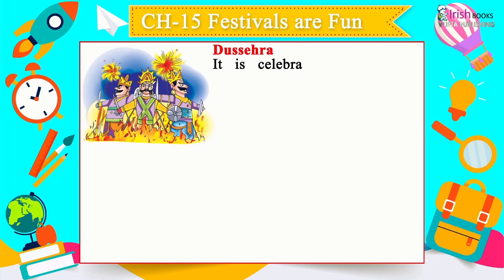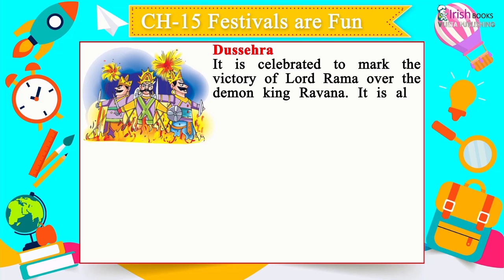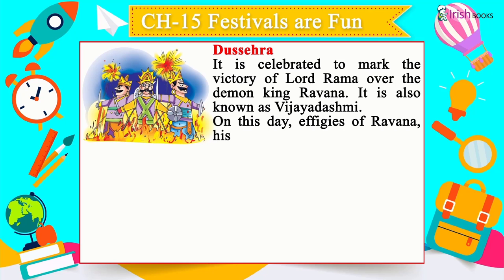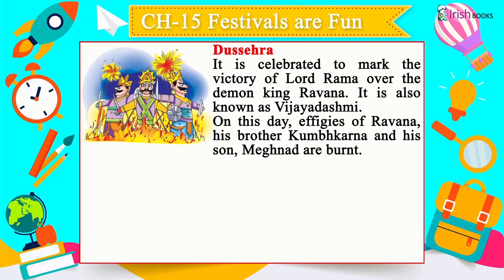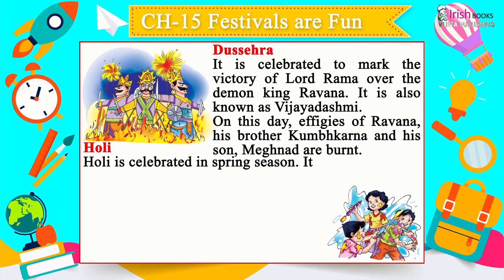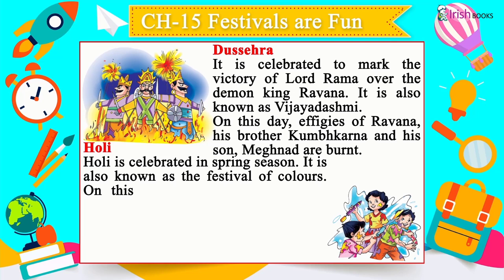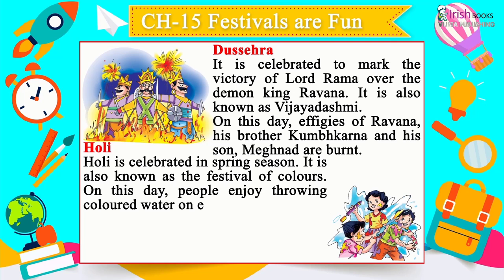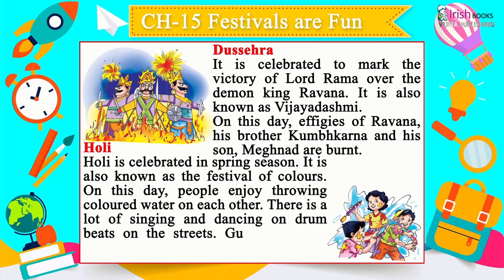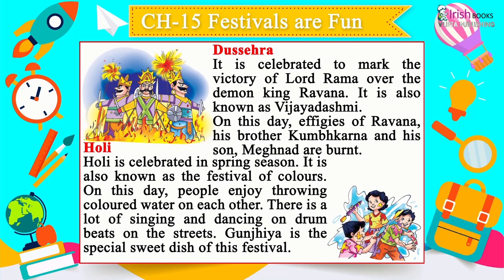Dussehra marks the victory of Lord Rama over the demon king Ravana, also known as Vijayadashami — effigies of Ravana, Kumbhkarna and Meghanath are burned. Holi is celebrated in spring season, also known as the festival of colours — people throw coloured water on each other, there is singing and dancing, and gujia is the special sweet dish.